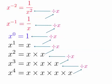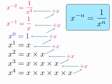And this pattern allows us clearly to see our definition, which is going to be x to the negative n is equal to 1 over x to the n.